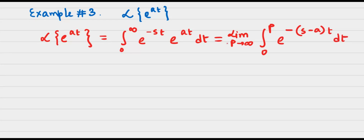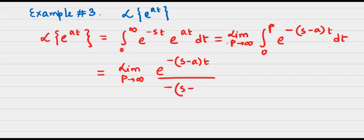The integration of this is very straightforward. Apart from writing down the limit p tends to infinity at the beginning, the integration gives e to the power negative (s minus a) times t, divided by negative (s minus a). This is just like the integration of e to the power negative st dt, which appeared in the Laplace transformation of 1. We then write down the limit with t going from 0 to p. Substituting, t equals 0 gives the lower limit contribution.